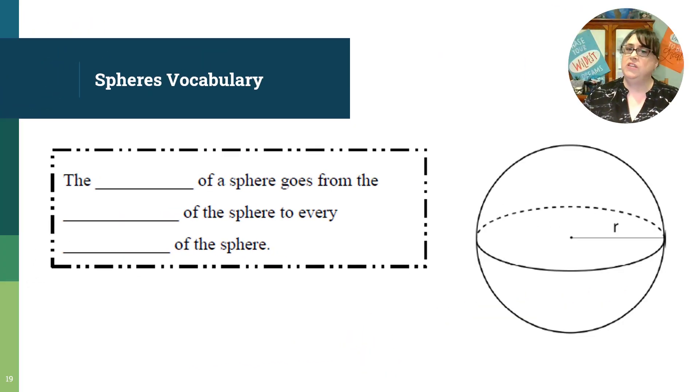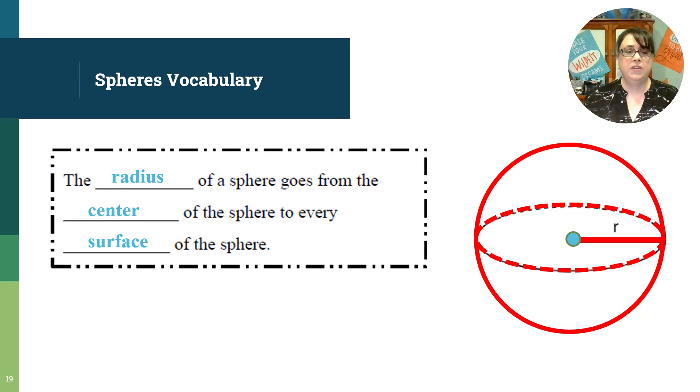To begin with, we need to define what a sphere is. A sphere is a nice perfectly round ball. But we have to be able to define it mathematically. A radius of a sphere goes from the center to every surface of the sphere. Imagine you had a string and it went all the way around and you could twirl it and it would touch every surface on the outside. A sphere has the volume of four-thirds pi r cubed.